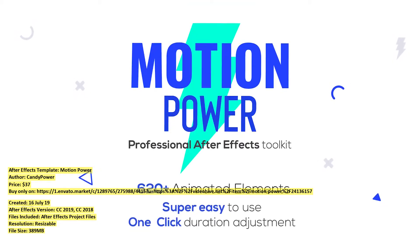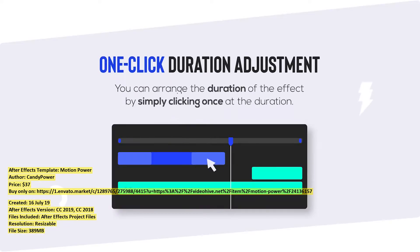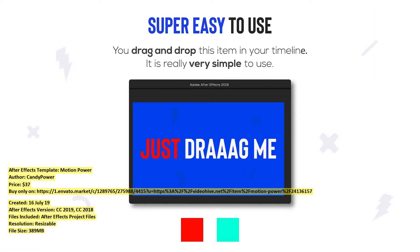Motion Power. Professional After Effects Toolkit. The best and simplest way to create better videos. Super easy to use — just drag and drop.